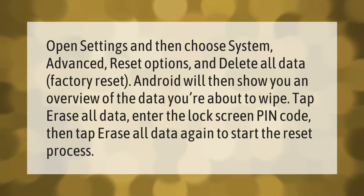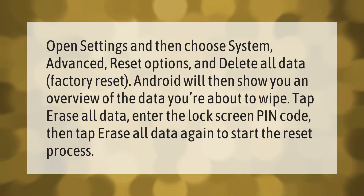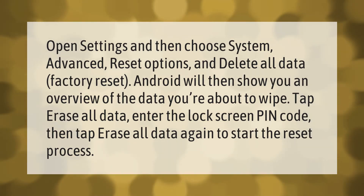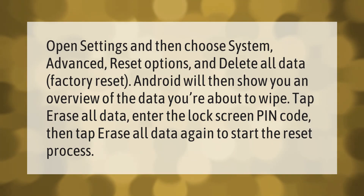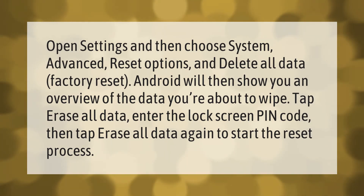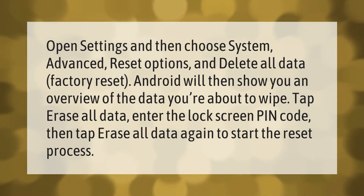Open Settings, then choose System, Advanced, Reset Options, and Delete All Data (Factory Reset). Android will then show you an overview of the data you're about to wipe. Tap Erase All Data, enter the lock screen PIN code, then tap Erase All Data again to start the reset process.